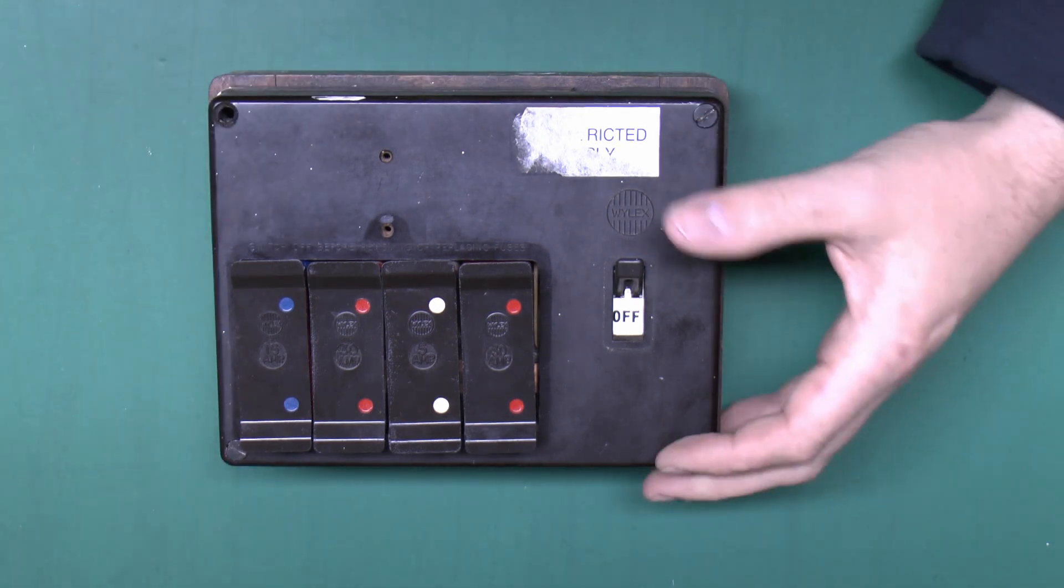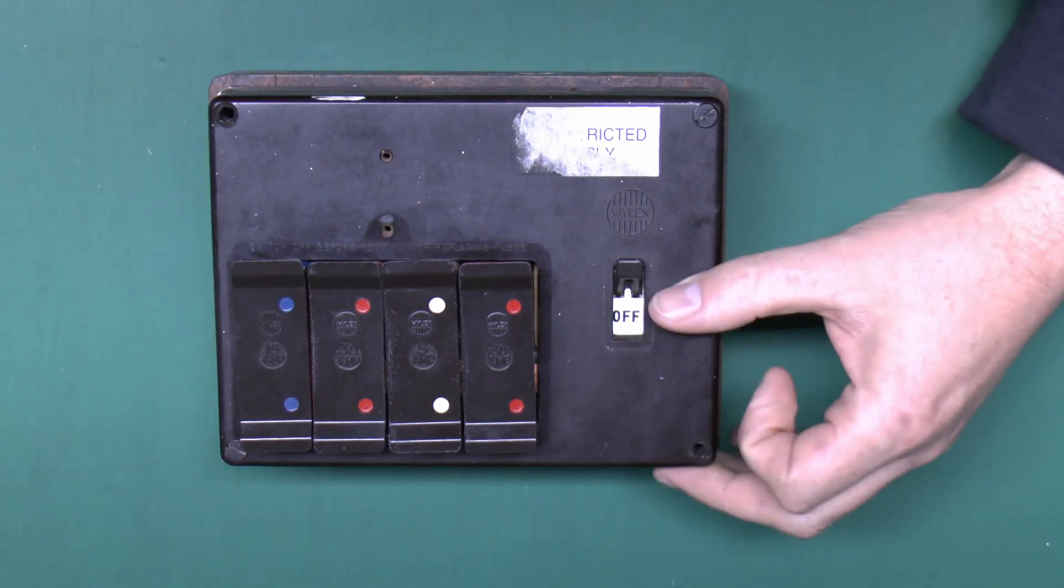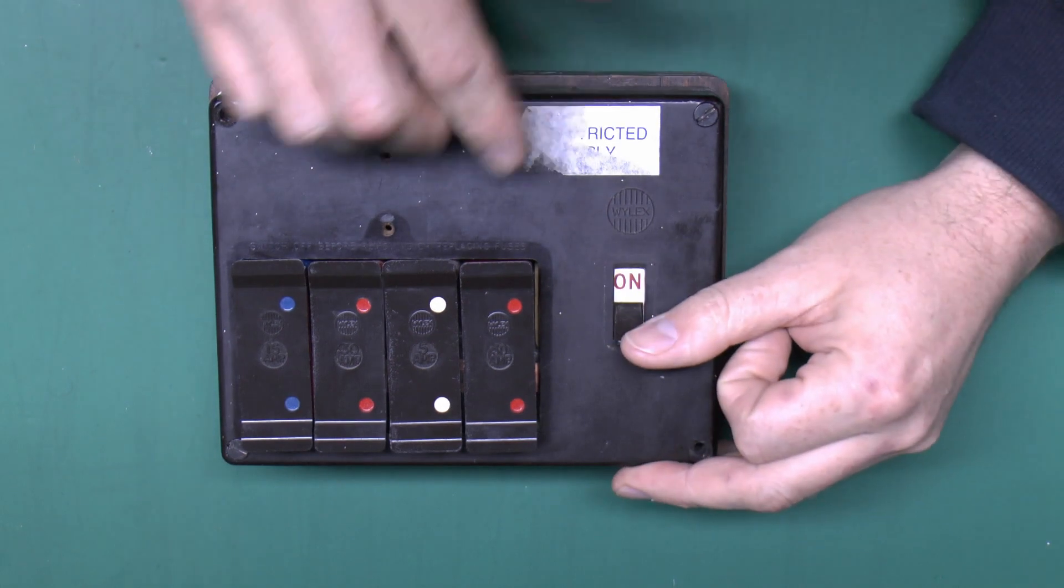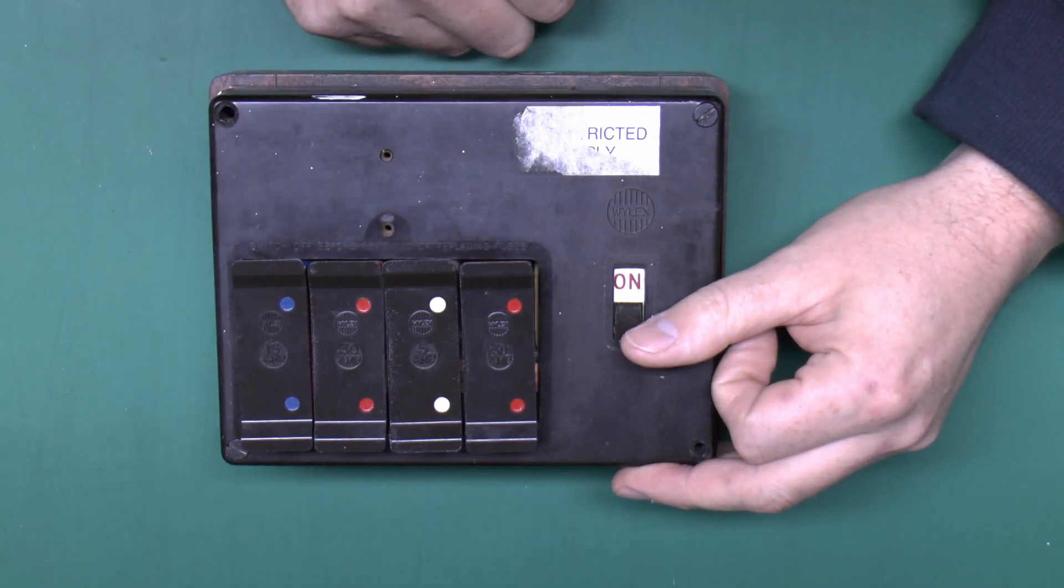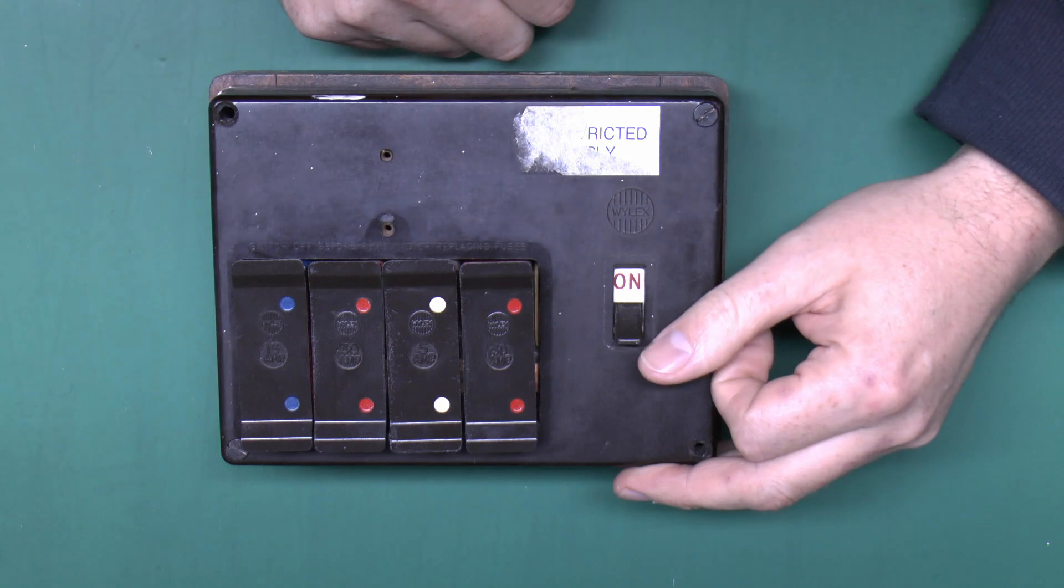If you haven't got the cover and you must turn it on with the cover on, do it from over this side. So if there's a problem here, any molten metal or sparks coming out of there will be well away from your fingers.